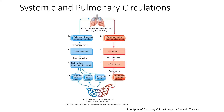From the left atrium, blood goes to the left ventricle through the bicuspid valve. Then from the left ventricle, blood goes through the aortic valve to the aorta and systemic arteries. In the systemic capillaries, this blood loses oxygen and gains carbon dioxide, becoming deoxygenated again. This deoxygenated blood then returns to the right atrium, and the cycle continues — this is the systemic and pulmonary circulation.